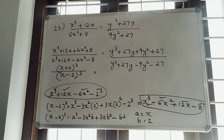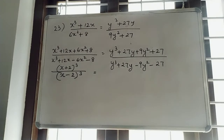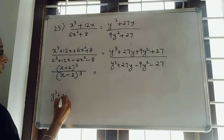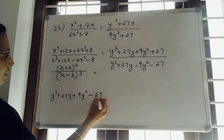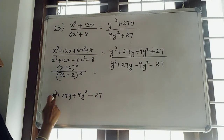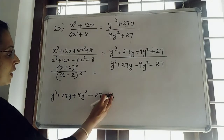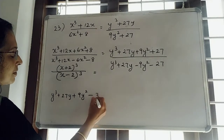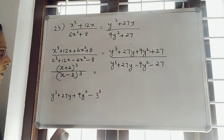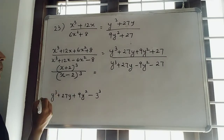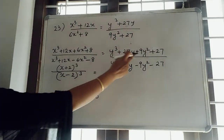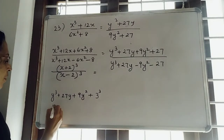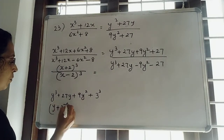Then same case RHS. Look at the numerator of the RHS: y³ + 27y + 9y² + 27. We can write 27 as 3³. So replace 27 as 3³. This is in the form of (y + 3)³.